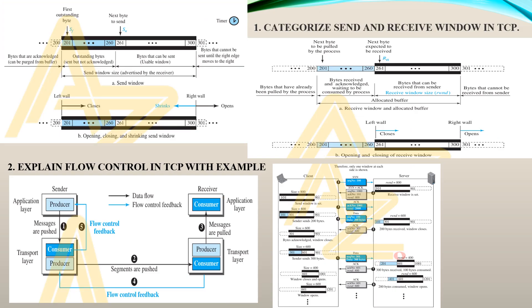First question: categorize the send and receive window in TCP. In TCP we have send and receive windows, followed by different protocols like selective repeat, simple protocol, and go-back-N protocol. Each of these protocols follows the send and receive window.